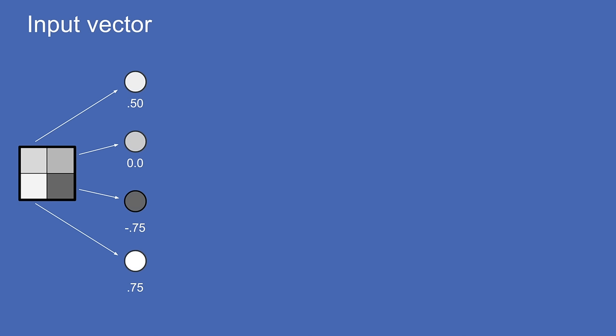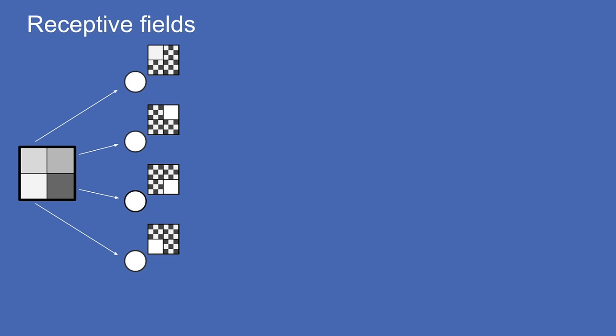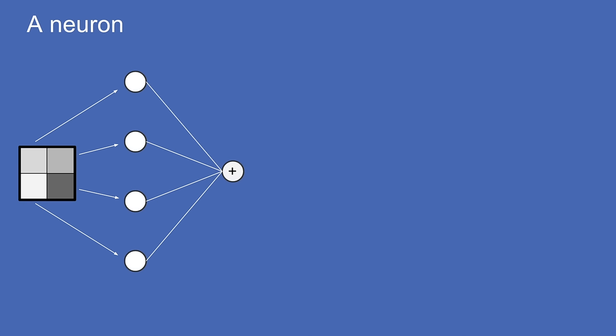Once you have these values listed on the input neurons, it's also called the input vector or array — just a list of numbers representing your inputs. A useful notion is the receptive field of a neuron: what set of inputs makes the value of that neuron as high as possible? For input neurons, each one is associated with just one pixel, and when that pixel is all the way white, the neuron's value is as high as it can go. Black-and-white checkered areas show pixels that a neuron doesn't care about at all.